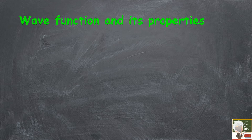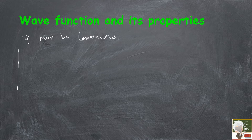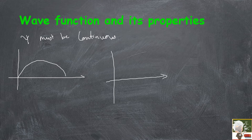The wave function must be continuous. On the graph, the function should be smooth and connected. If it is discontinuous, that means your particle is absent in that region. There is a gap, and in that region your particle is absent. So it should be a continuous function.